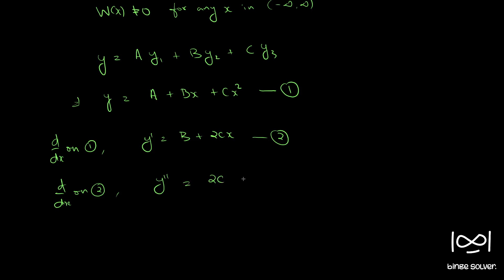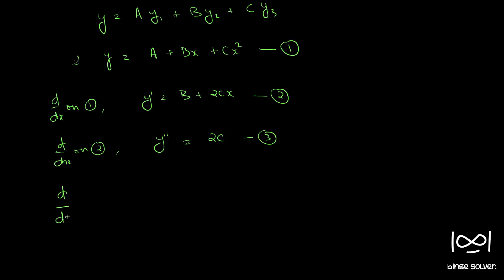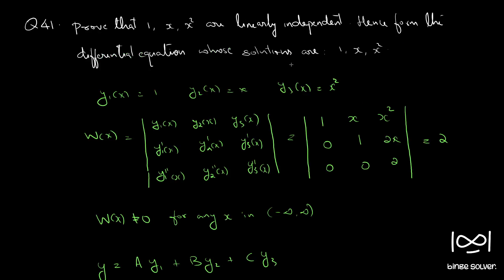So we have obtained c. Differentiating once more, y''' = 0. Therefore y''' = 0 is the differential equation that has y1(x), y2(x), and y3(x) as its independent solutions. This is the solution to question 41.